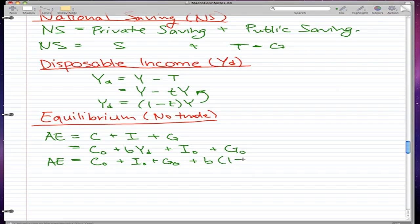All I did here is I just rearranged our variables that we expanded. And what happened to our bYd is, well, I just showed here that Yd is equal to 1 minus tY. All I did is I substituted our Yd for this expanded version of Yd.